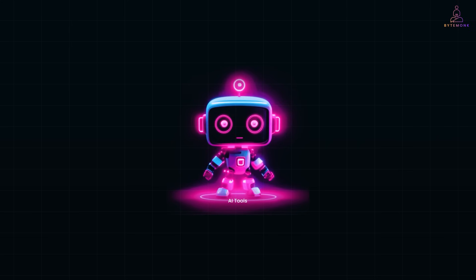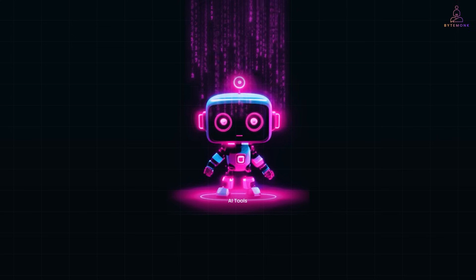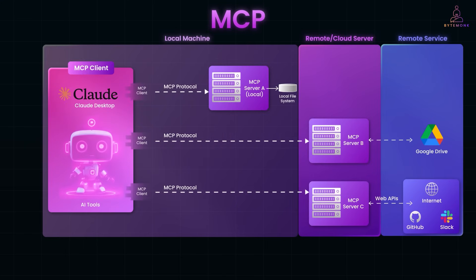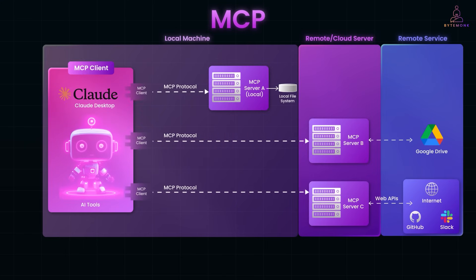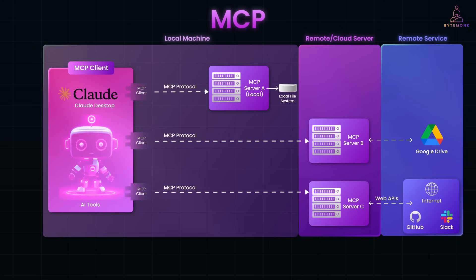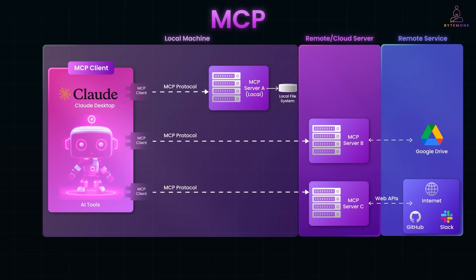Normally, an AI model is limited to what's in its training data or what the user provides in a prompt. With MCP, the AI can ask for help from external helpers — for example, fetching today's weather from an API, searching a document, or executing a calculation — all through a standardized procedure. This means the AI isn't stuck in isolation; it can reach out and use tools just like you would.